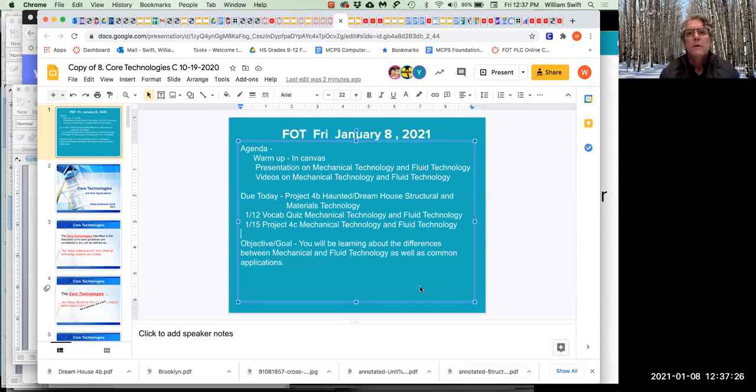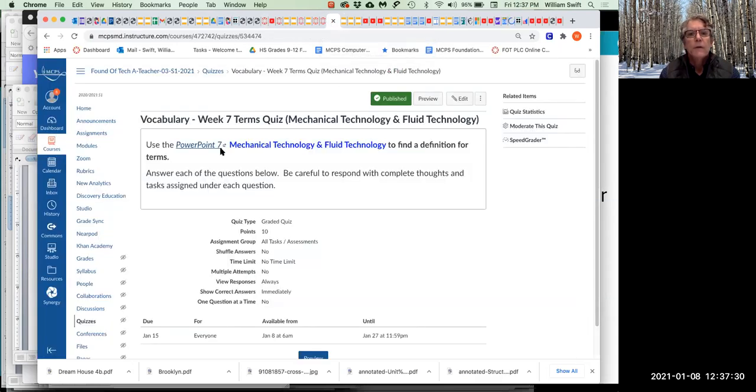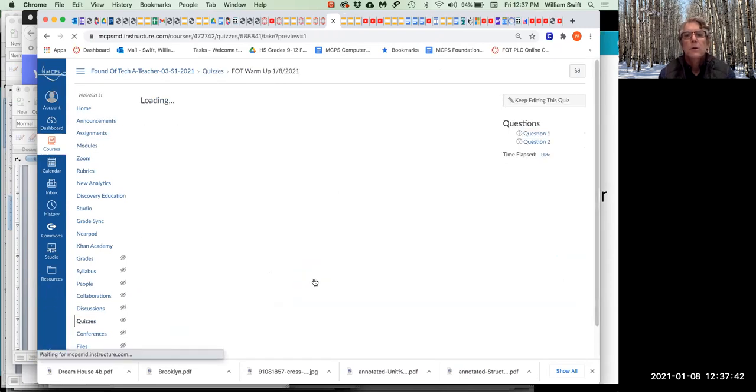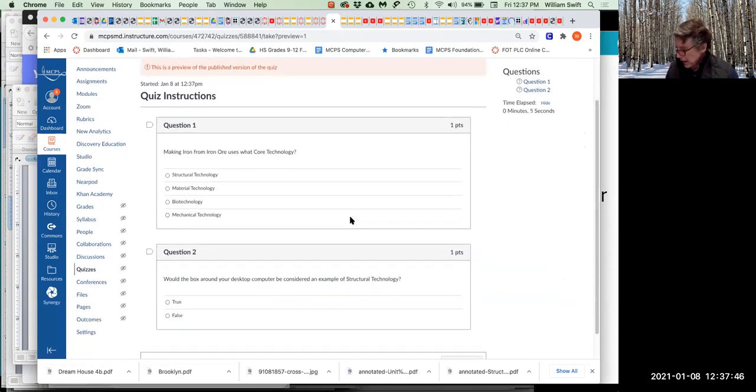The first thing I'd like to do is let's do the warm up and then we have sad and depressing things to talk about. We will use the fabulous spinner. Question one: making iron from iron ore uses what core technology? Is it A structural technology, B material technology, C biotechnology, or D mechanical technology? You can put them in the chat. Leila, what do you think is the right answer here?